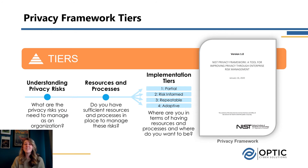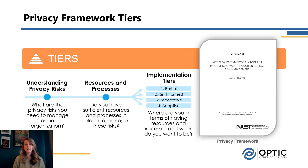Next, we have the tiers. The tiers help us understand our privacy risk and communicate that risk across our organization. The implementation tiers that have been defined are broken down into four different levels: partial, risk informed, repeatable, and then adaptive at the highest level.